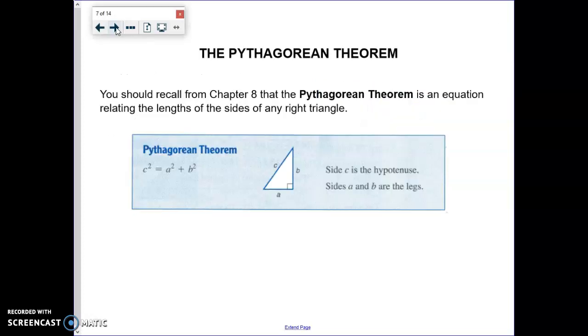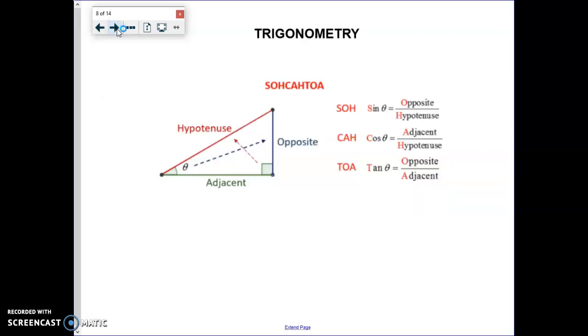Now, you can also remember that we can use the Pythagorean theorem if we know two of the three sides of the right triangle. So at any time, if you're ever given or you find two of the three sides, you can use the Pythagorean theorem to find that remaining side.